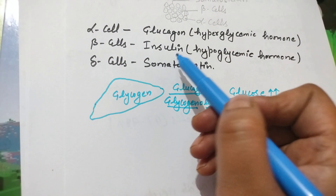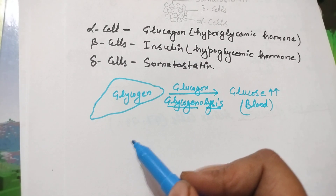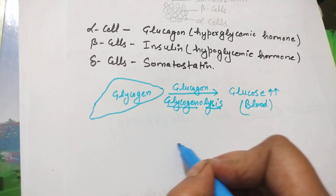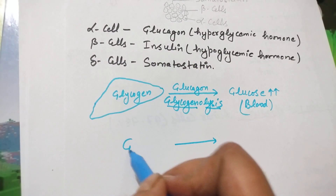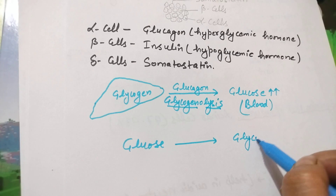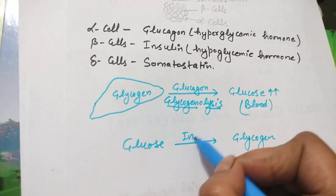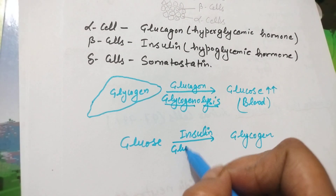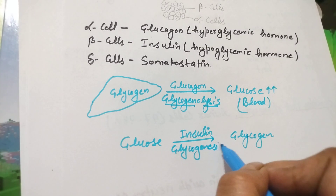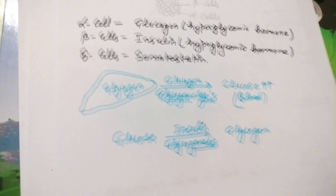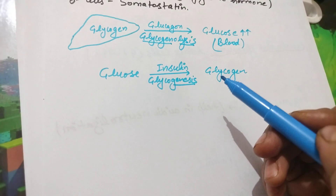Insulin has a function opposite to glucagon — they are antagonistic hormones. Insulin will convert that glucose back to glycogen, and this process is known as glycogenesis. Genesis means formation — formation of glycogen. So that is about glucagon and insulin.